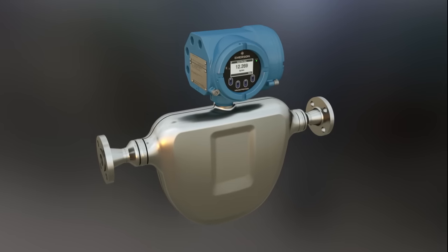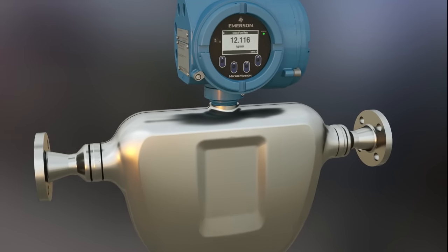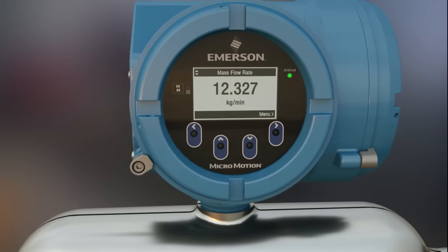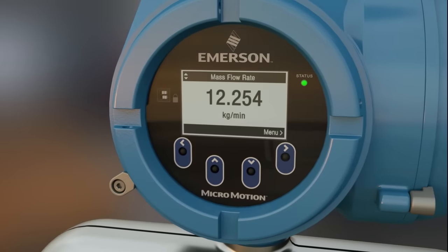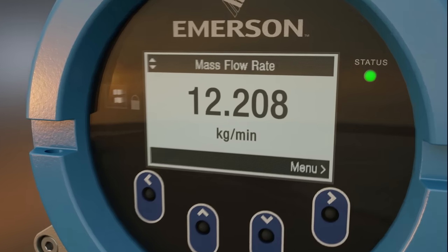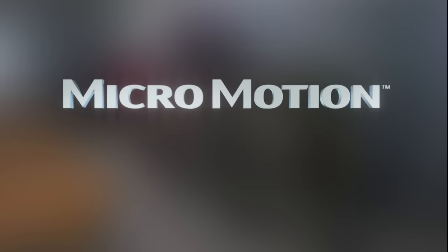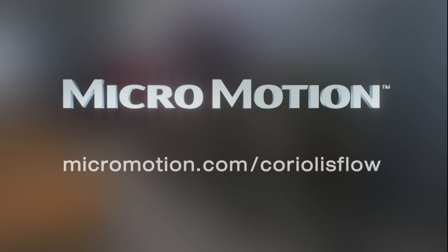Using these techniques, the Micromotion Coriolis meter delivers highly accurate, direct mass flow and density measurements in a broad range of applications. To learn more about Micromotion Coriolis flow and density meters, visit micromotion.com/coriolis-flow.